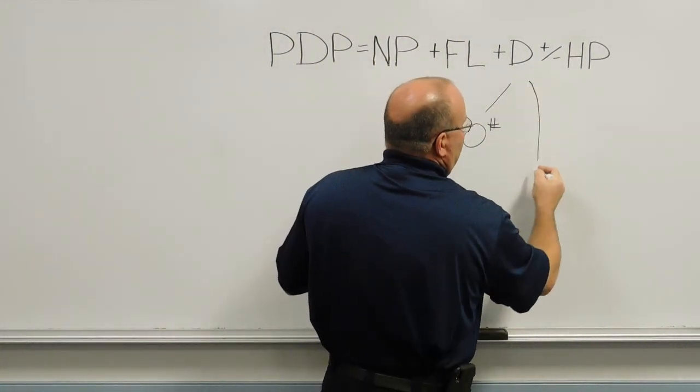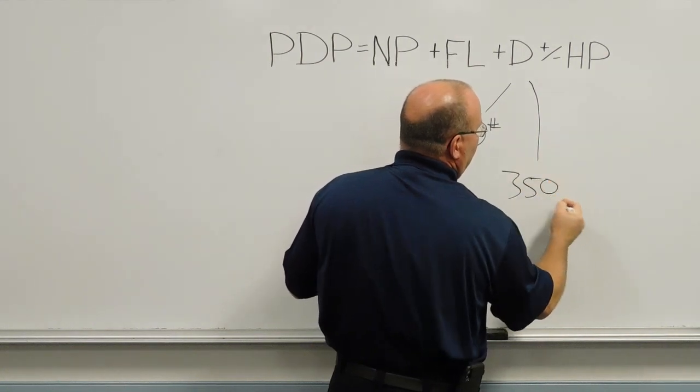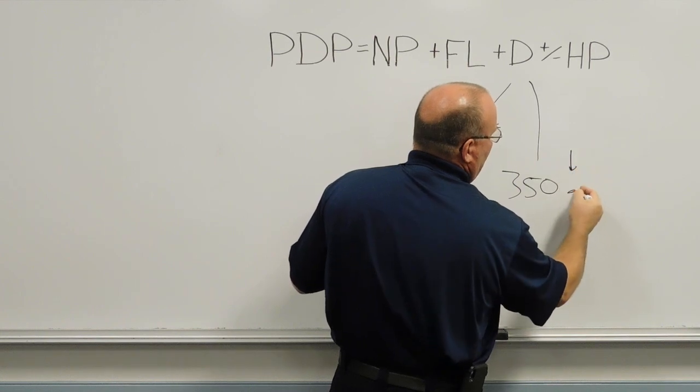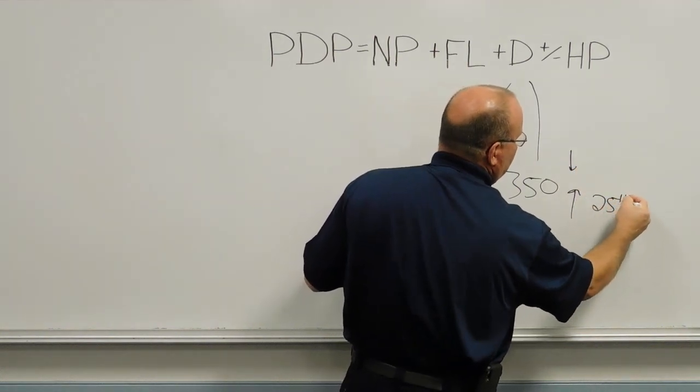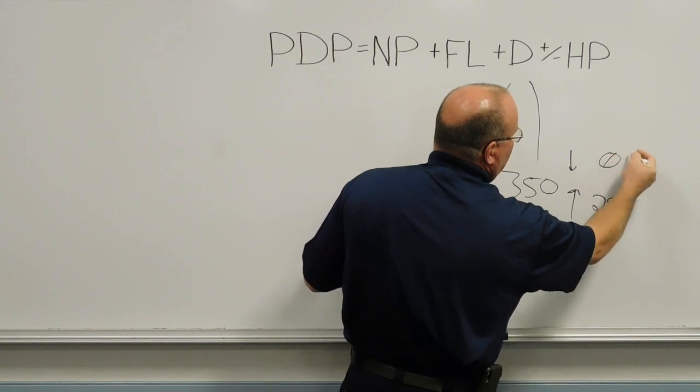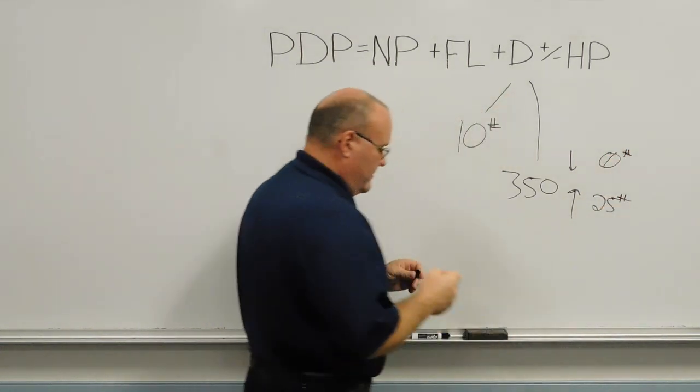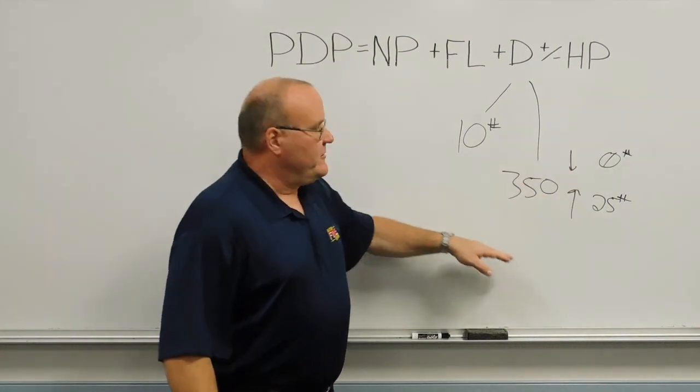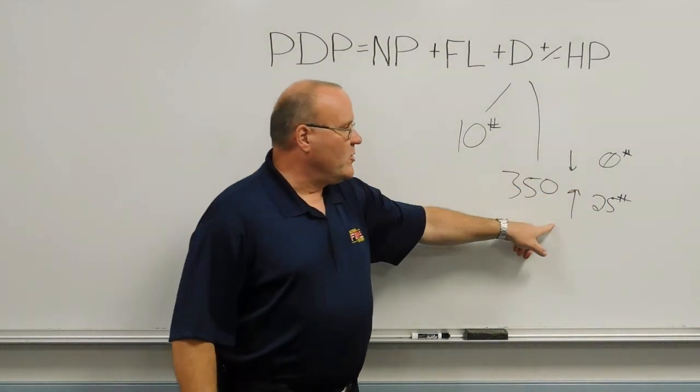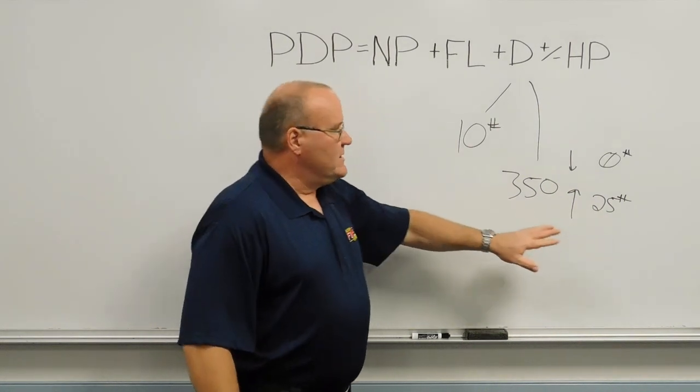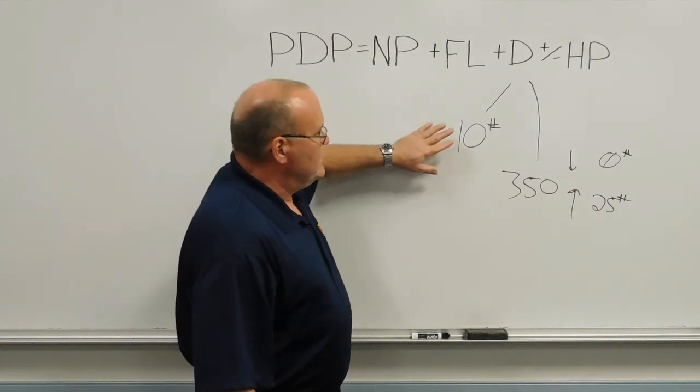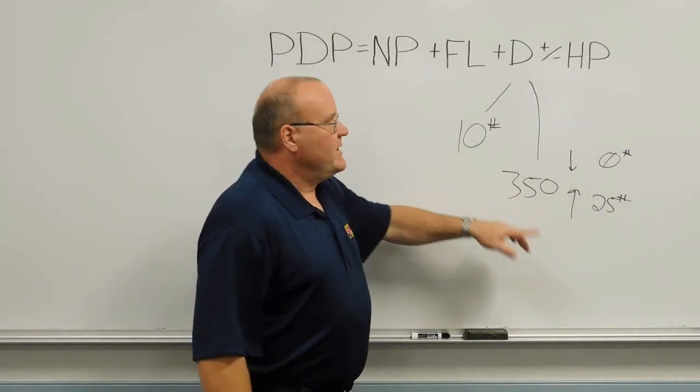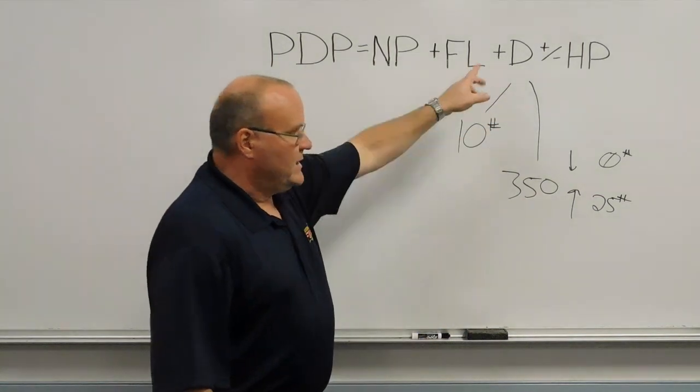Some people use the flow, and they will come up with a friction loss number or a device number based on the flow through the device. If they're flowing 350 gallons a minute or less, they count zero. If they're flowing 350 gallons a minute or more, they would give it 25 pounds for that device. So whichever method you use, whether you're using 10 pounds per device or accounting for the friction loss in the device based on flow, make sure you account for it and plug it in here under devices.